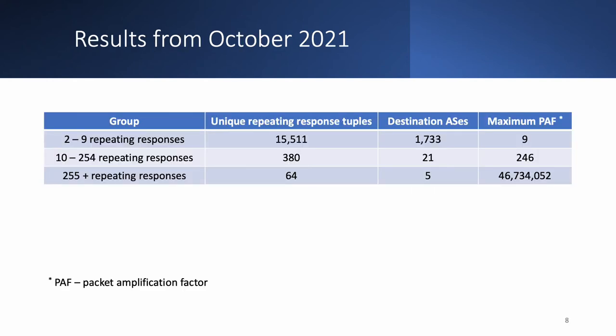The table presents results of the open resolver scan from October 2021. Based on the packet amplification factor, we divided repeating responses into three groups. The first group is responses returned two to nine times, likely not caused by routing loops. The second and third groups are most likely caused by routing loops — the second by requests with decreasing TTL, while in the third group TTL was never decreased. Essentially the third group contains infinite amplifiers with very high packet amplification factors; one request resulted in 46 million responses.